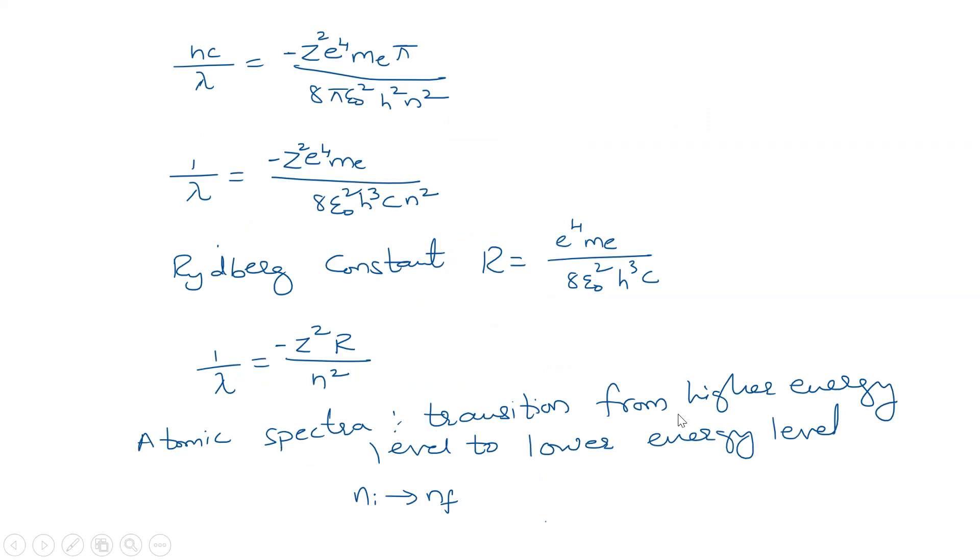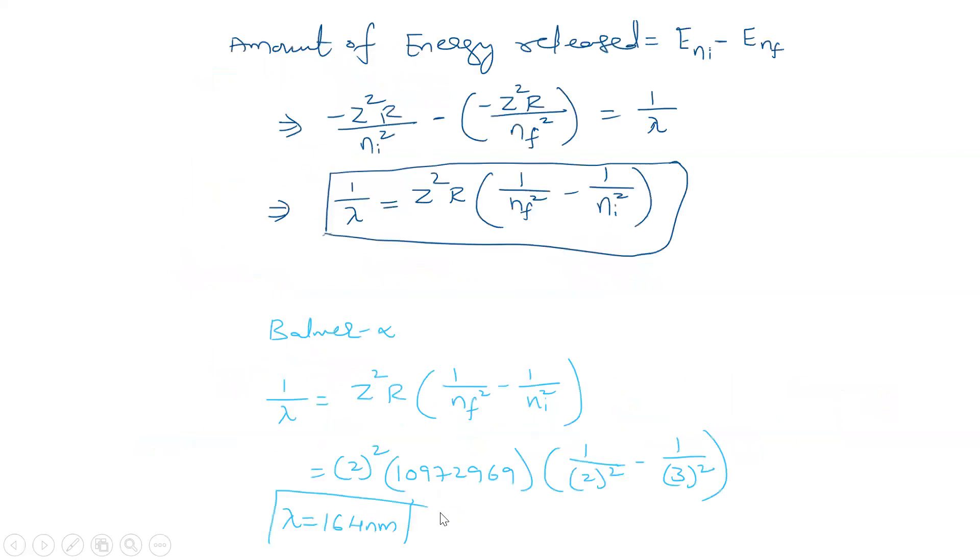Atomic spectra is transition from higher energy level to lower energy level that is from initial orbit to final orbit. When we substitute here by taking Z squared R common then 1 by nf squared minus 1 by ni squared we get.